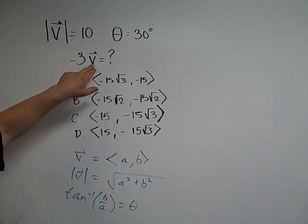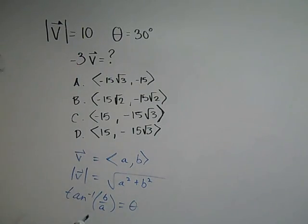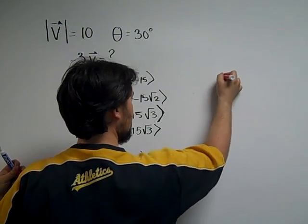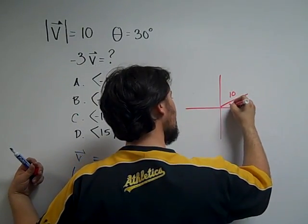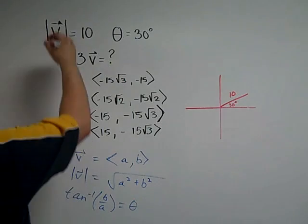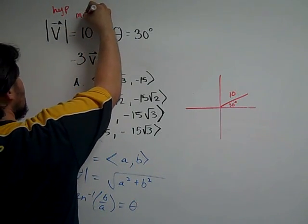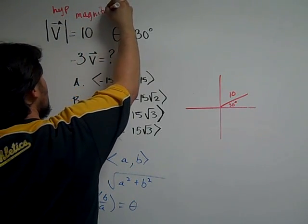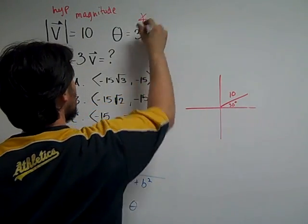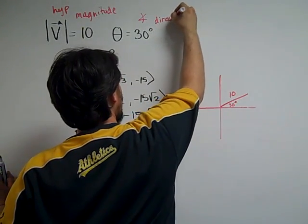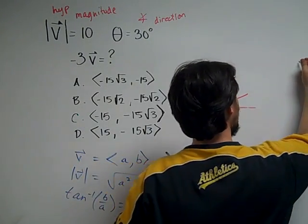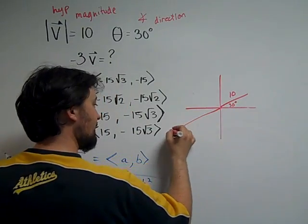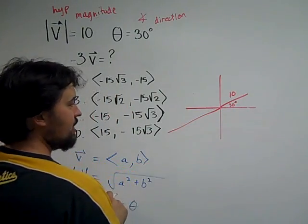Now, negative 3V. Let's just think about it being 3V. 10 is the hypotenuse, or the magnitude. And then we have our angle, or our direction. So 3V would be 3 times as large.